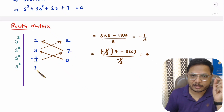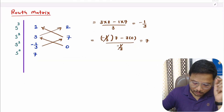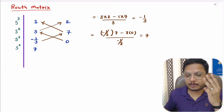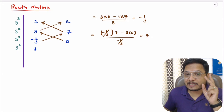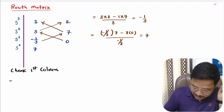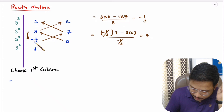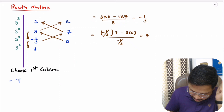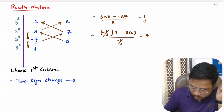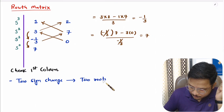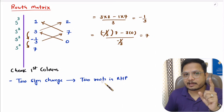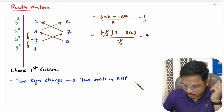Now we check the third step — sign changes in the first column. We see a sign change from positive to negative, and then a second sign change from negative to positive. There are two sign changes in total, meaning we have two roots in the RHP. Since any root in the RHP makes the system unstable, we can say the system is unstable.